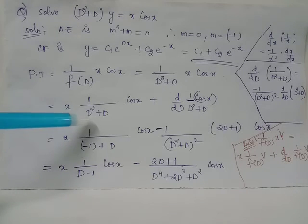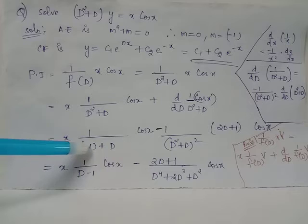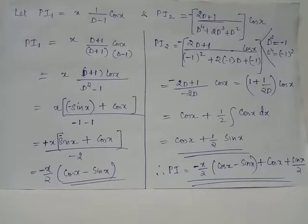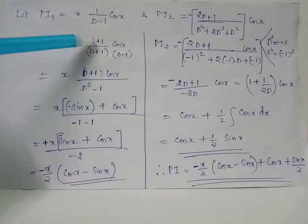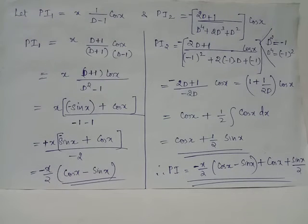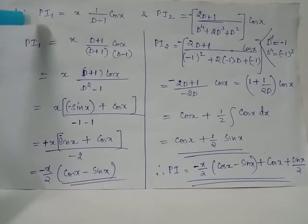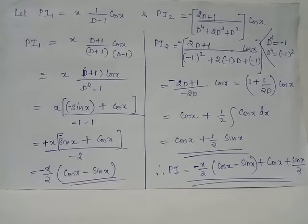Wherever D² appears, it has been replaced by -1, so the denominator becomes D - 1. In order to obtain the denominator in the form a² - b², we multiply numerator and denominator by (D + 1). Now the first term of the particular integral, denoted PI1, is x·(1/(D - 1))·cos(x), which becomes x·(D + 1)/(D² - 1)·cos(x).